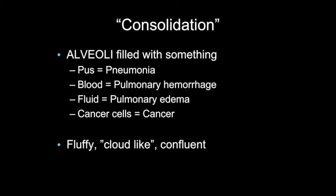Most commonly in the emergency department we're seeing acute patients who have either infection or hemorrhage — pneumonias and pulmonary hemorrhages. If it's chronic and doesn't go away, you need to worry about things like cancers or chronic inflammatory consolidations like eosinophilic pneumonia and organizing pneumonia. For now, know what consolidation means, what it looks like, and that you're most commonly seeing it with pneumonias.